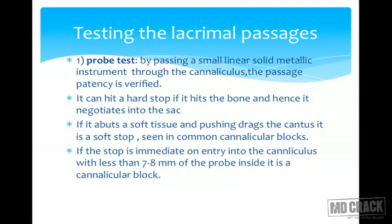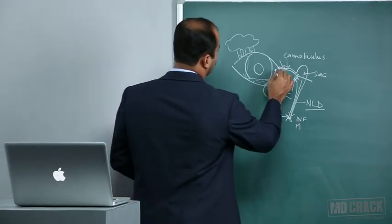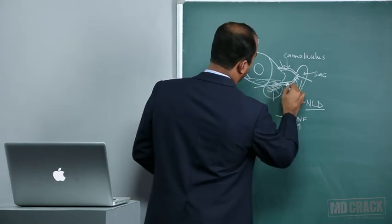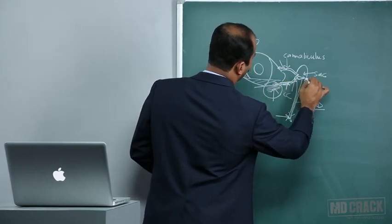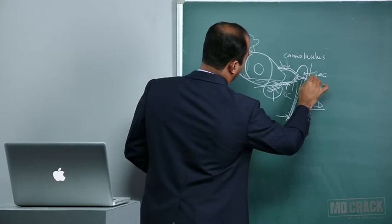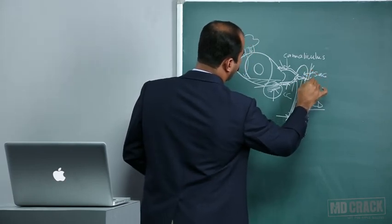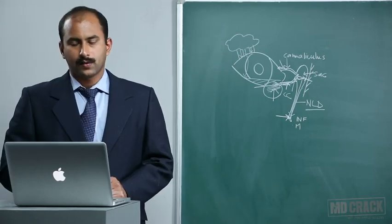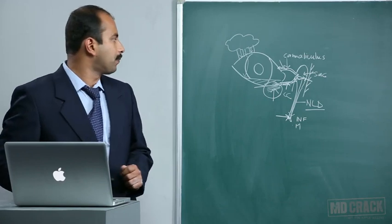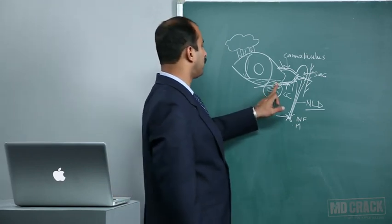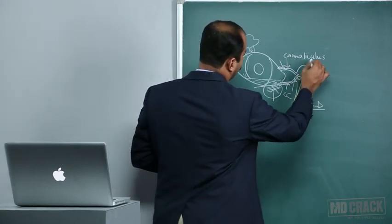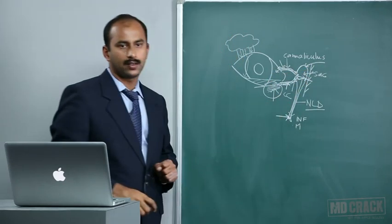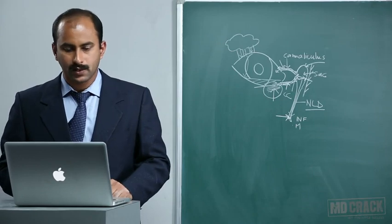Testing is done by the probe test, in which a metallic probe is passed after dilatation of the punctum through the canaliculus. If all proximal passages are patent, the probe hits the bone just behind the lacrimal sac in the lacrimal fossa, giving a hard stop. A hard stop confirms patency from the punctum to the lacrimal sac. Clinically, pressure on the sac causing reflux of discharge into the conjunctiva is equivalent to a positive hard stop on probe test.